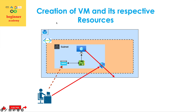In today's session, what we would be doing is we will try to create a virtual machine as well as VNets, resource group, public IP, NIC, and NSG rules. On top of that, we will install an NGINX server — that is the web server — on this particular virtual machine, and then we will access it via public IP.